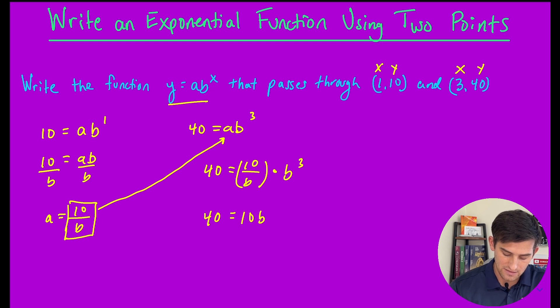That gives us 10b squared. Dividing both sides by 10, we get 4 equals b squared.